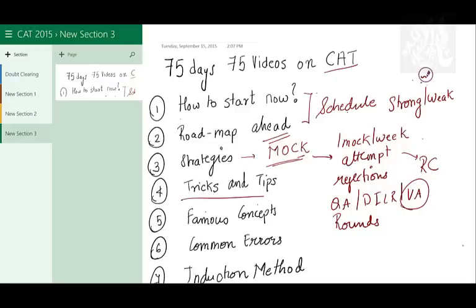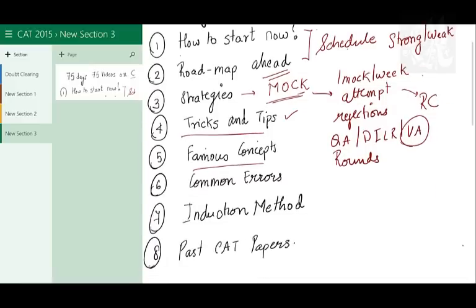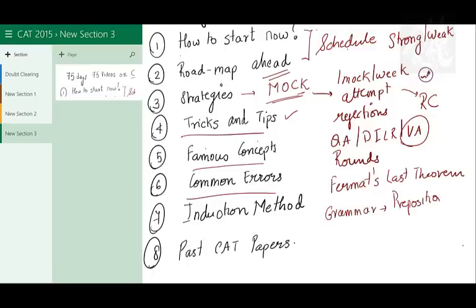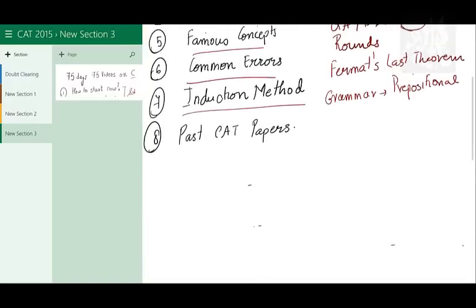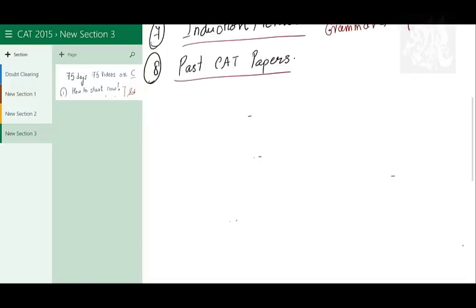We're going to be talking about a lot of videos on tips that we have developed over the years, the famous concepts in CAT. For example, something like Fermat's Last Theorem. If you know Fermat's Last Theorem, you could easily get through a question in CAT in probably 2011. Common errors is basically in grammar. You make a lot of errors like punctuation errors. These kind of errors we're going to be taking care of. In our videos in future, I'm going to discuss a few methods which I've developed over the years, like induction method, make your own problem method and everything like that. And past CAT papers will solve the most beautiful questions in the past CAT papers across all sections.